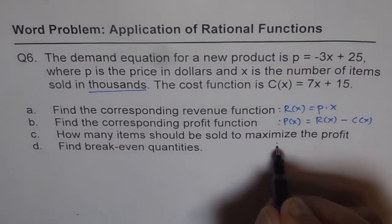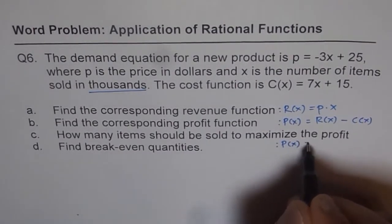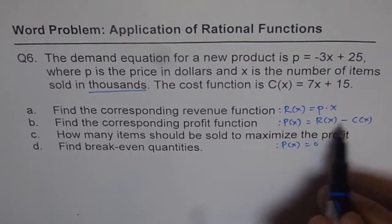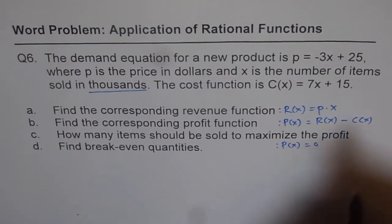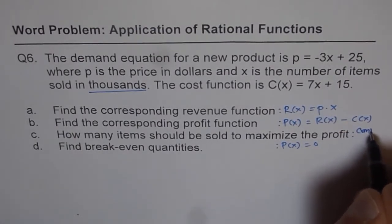For break-even, you need to equate profit to 0. That means revenue equals cost. That is for break-even. And here, you should maximize using completing squares. So complete squares.